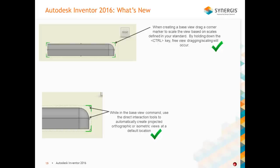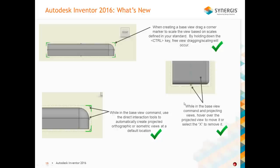There are green corner markers on the view that allow you to click and drag to scale your view — either free scaling or using predefined scales from your document styles. Target markers or triangles are projection tools — click one to project your view to a specific location. It's a very fast and easy way to get your base view and projected views placed. If you put a projected view on and it's not the one you want, just click the X to delete it.